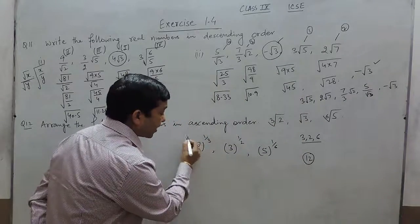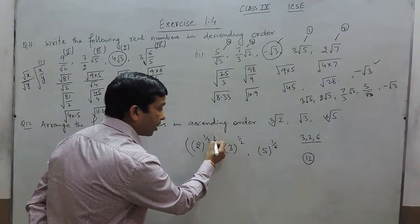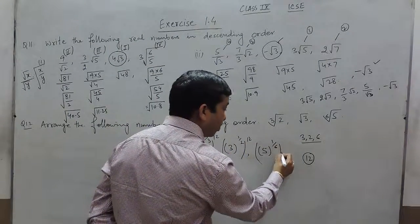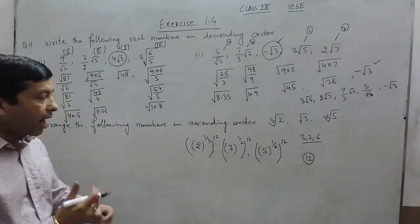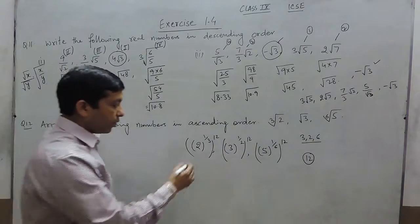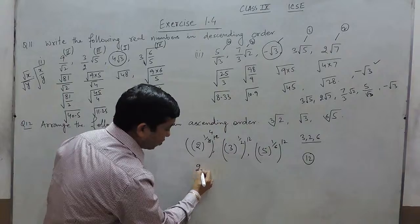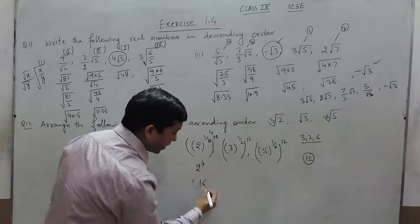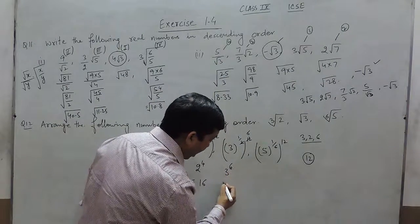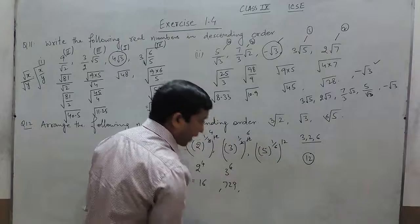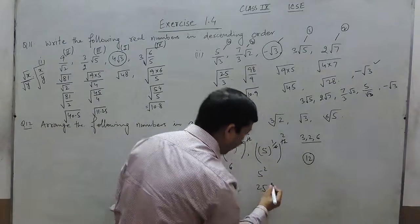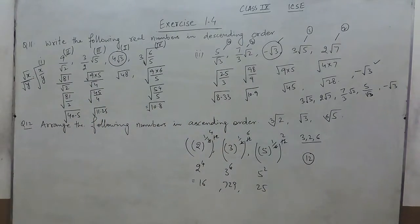If we raise each number to the power of 12: for 2^(1/3), we get 2^(12×1/3) = 2^4 = 16. For 3^(1/2), we get 3^(12×1/2) = 3^6 = 729. For 5^(1/6), we get 5^(12×1/6) = 5^2 = 25. A smaller number will have a smaller value and a greater number will have a greater value, so the comparison is now clear.